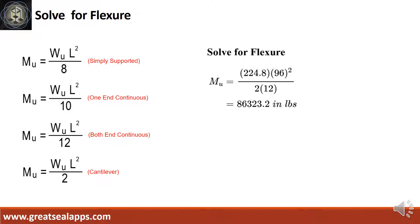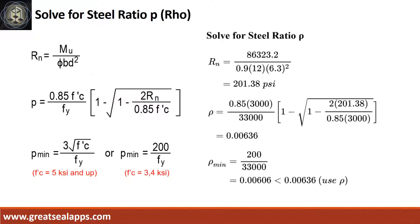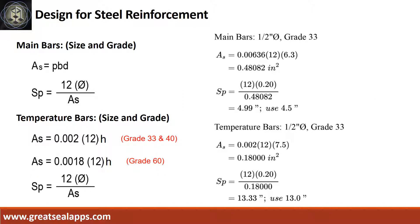Given factored load equals 224.8 pounds per foot and L equals 8 feet, the maximum moment is 86,323.2 inch-pounds. Given MU equals 86,323.2, resistance factor equals 0.9, B equals 12, and D equals 6.3, the beam design ratio RN equals 201.38 PSI and reinforcement ratio equals 0.00636. Given that, with B equals 12 and D equals 6.3, the area of steel for main bars is 0.48082 square inch and spacing for half inch diameter bar is 4.5 inches.